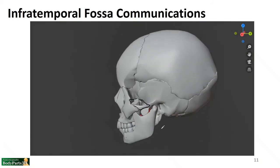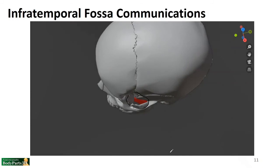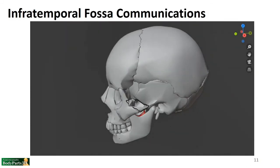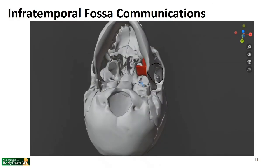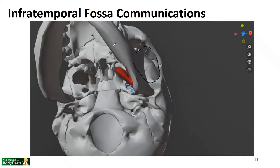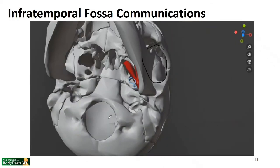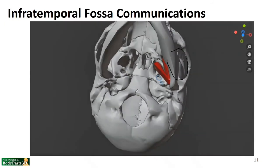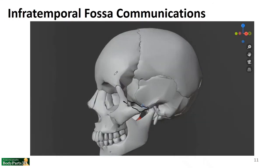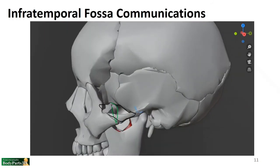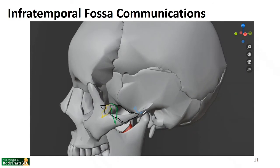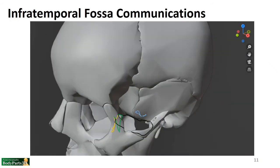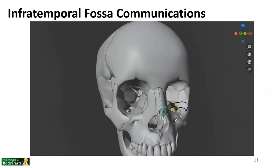In the color-coded summary diagram: shown in black is the space where the temporal fossa communicates with the infratemporal fossa. In blue are the foramina where the infratemporal fossa communicates with the middle cranial fossa — foramen ovale and foramen spinosum. In green is the pterygomaxillary fissure between the lateral pterygoid plate and the posterior maxilla. In yellow is the opening of the inferior orbital fissure leading into the orbit.